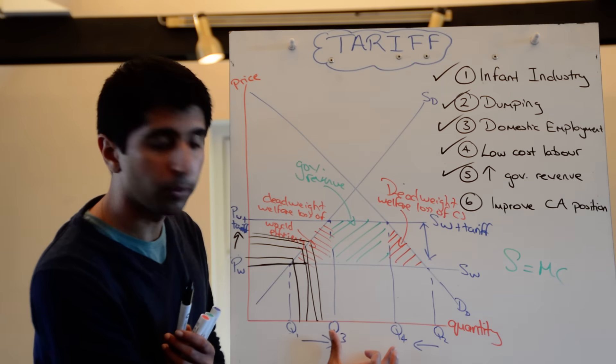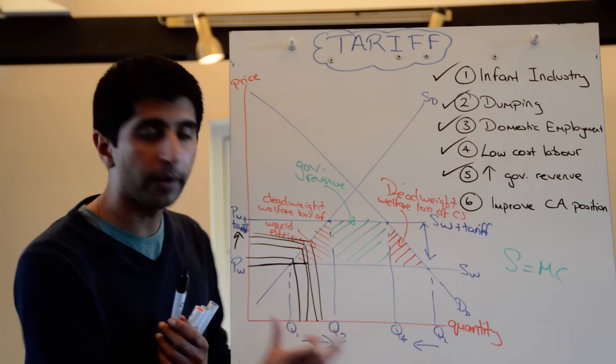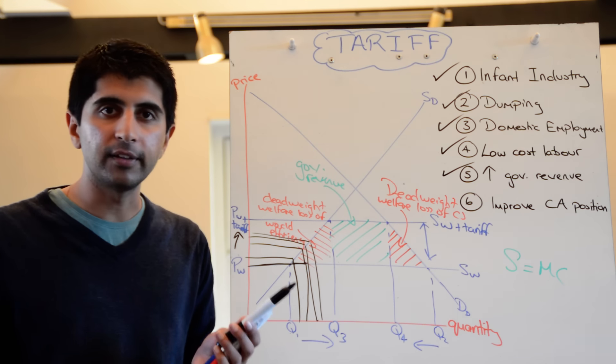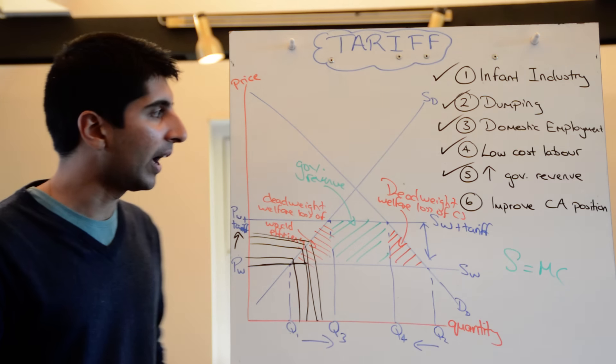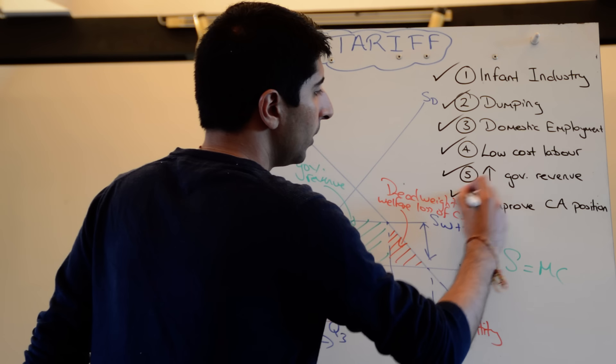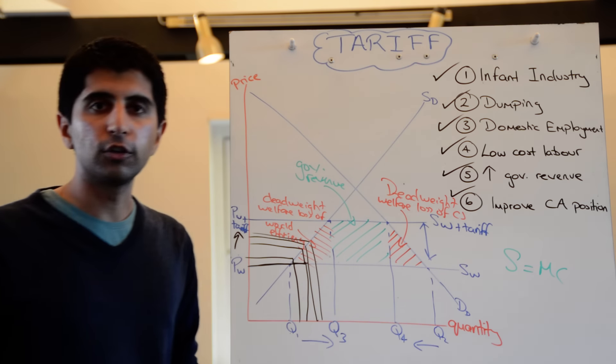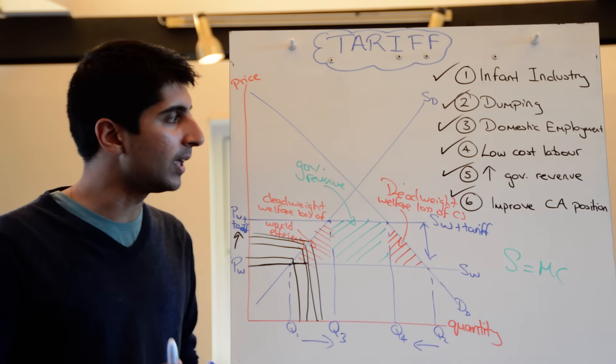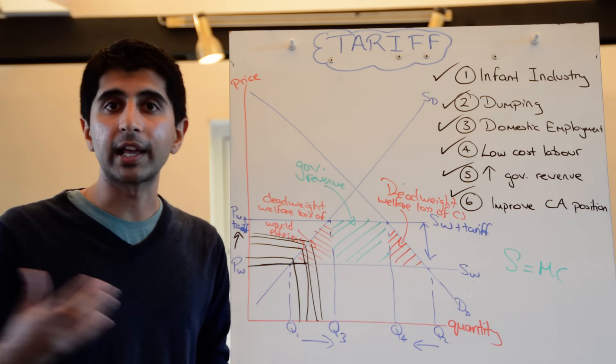And we have also talked about how protectionism might be used to improve the current account position of the nation. Well look, the squeeze of imports from Q1, Q2 to now only Q3, Q4 implies that less import expenditure will be taking place. And that, in theory, will improve a country's current account position and maybe will lead to a current account surplus. Who knows?